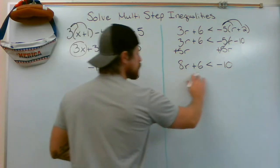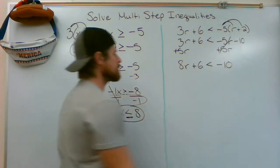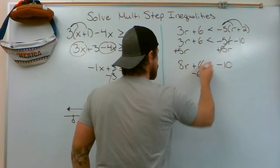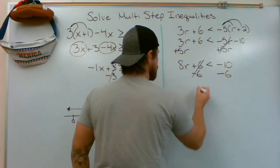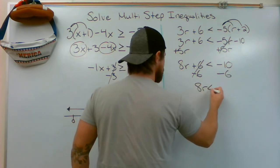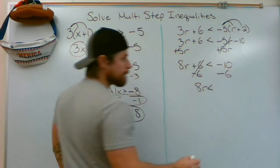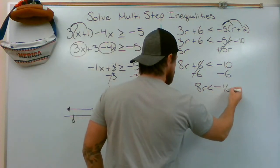Two-step inequality again, inverse operations. Move this over. Minus 6. Now I have 8r is less than negative 10 minus 6 is negative 16.